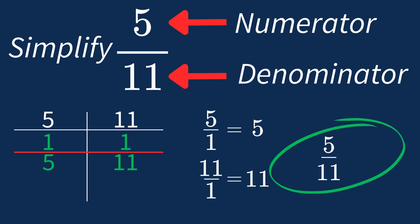This shows us that 5 over 11 is already in its simplest form. There's no larger number that can divide both parts evenly. So 5 over 11 is an irreducible fraction, meaning it's as simple as it can get.